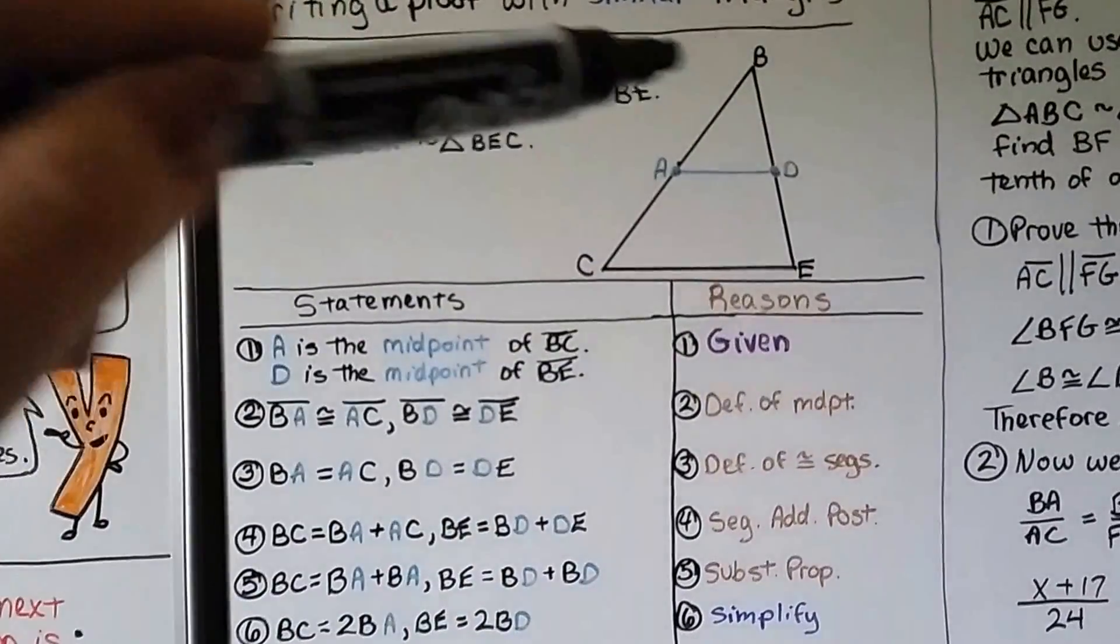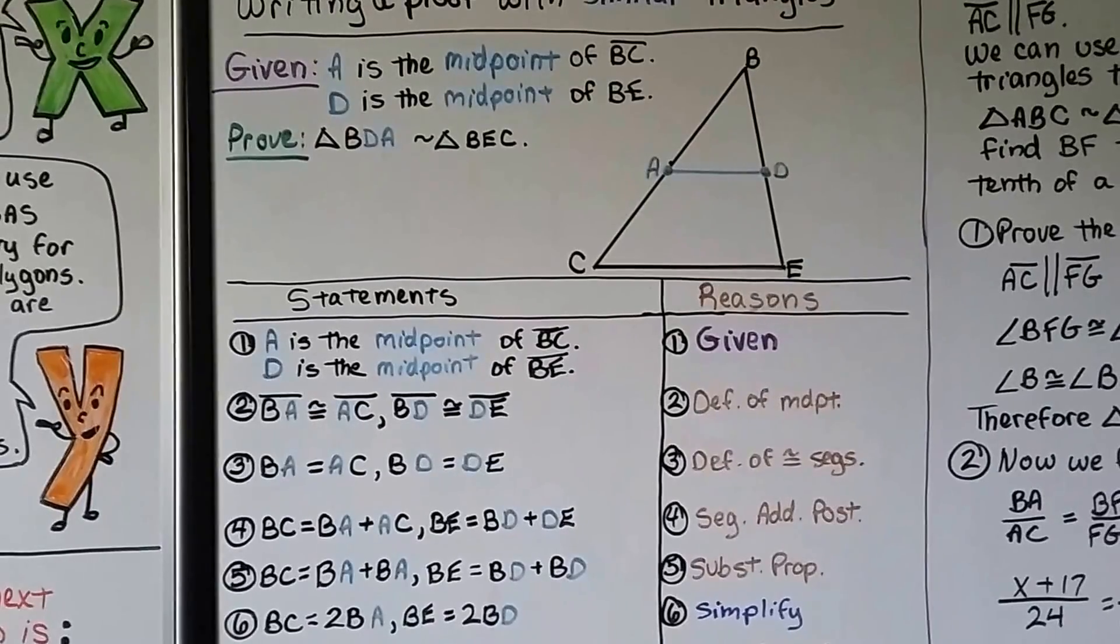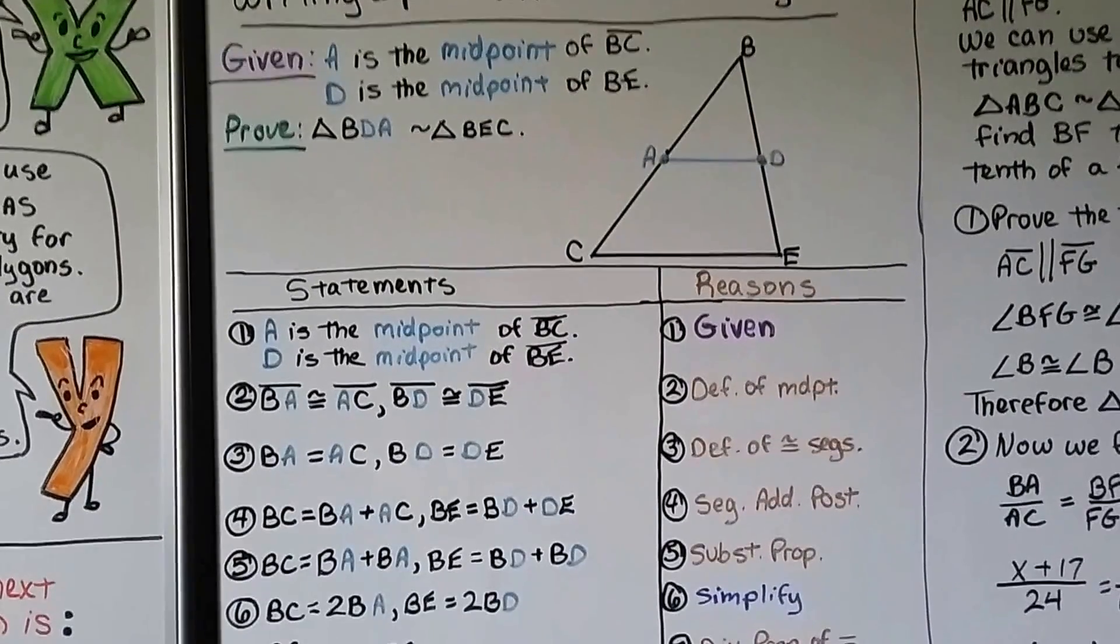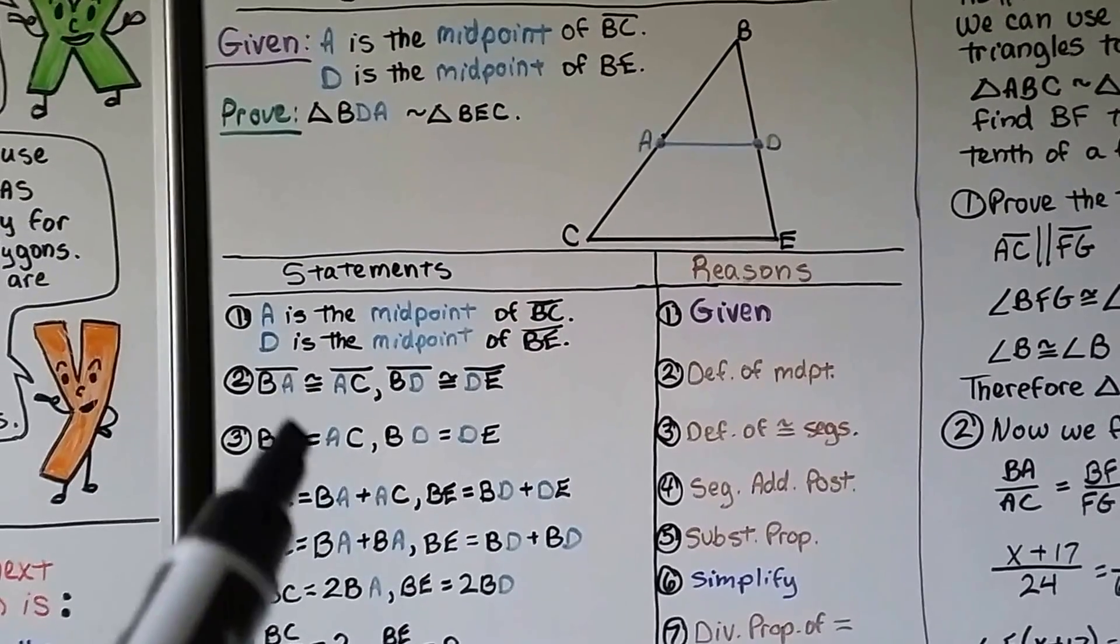If that's the midpoint, then this side is equal to this side. So now we have BA is equal to AC, and BD is equal to DE, because the definition of congruent segments, if they're congruent, they're equal.